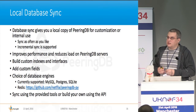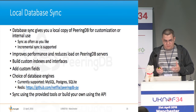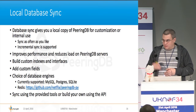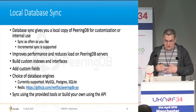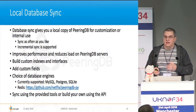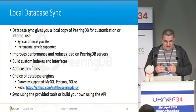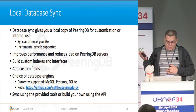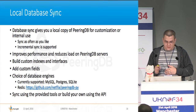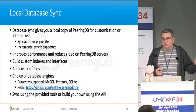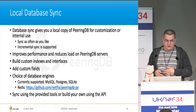There's also a local database sync, which is useful if you want a local copy of PeeringDB. Benefits include improved performance, no reliance on PeeringDB servers being up, and the ability to build custom indexes and interfaces. You can add whatever fields you like, build your own interface, and choose your database engine. The sync supports MySQL, Postgres, and SQLite. Netflix has contributed a Redis module for syncing into Redis. Or you can just use the API to pull particular fields without syncing the whole database.